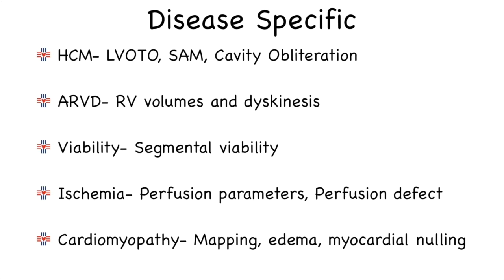So far we have discussed the generic model for cardiac MR reporting. Apart from this, some disease-specific parameters also have to be commented upon. For example, in a patient with hypertrophic cardiomyopathy, it is important to describe the severity of LV hypertrophy, which segments are involved, whether there is left ventricular outflow tract obstruction, whether there is systolic anterior motion of the mitral valve leaflet, and whether there is cavity obliteration — all important parameters that need to be mentioned.